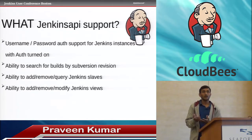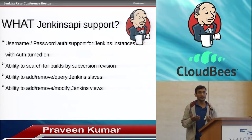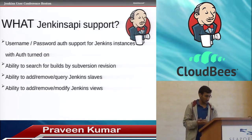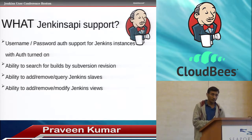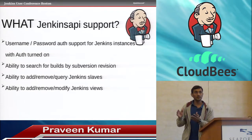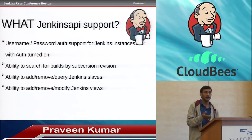If we have the username and password, we can also get the same Jenkins object by providing the username and password with a particular method. We can even find out the subversion for a particular job — which version or which particular code ID it is using right now for git.